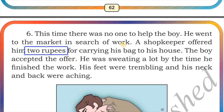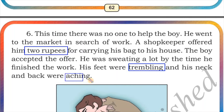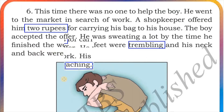The boy accepted the offer — when a job is accepted, the employer offers and the employee accepts. He said, 'Okay, I'll carry the bag for you and you can give me two rupees.' He was sweating a lot by the time he finished the work; his feet were trembling — trembling means shaking — and his neck and back were aching, meaning he had pain there from carrying the heavy bag.